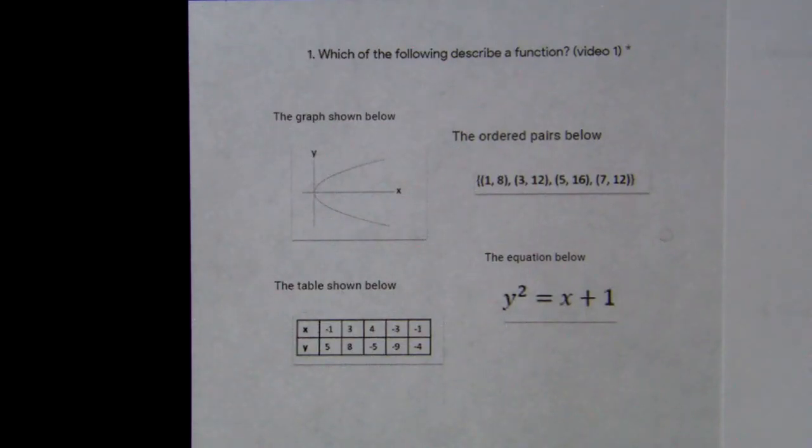For this problem, which of the following describes a function? We're going to look at a graph, a table, ordered pairs, and an equation, and we have to decide which one describes a function.